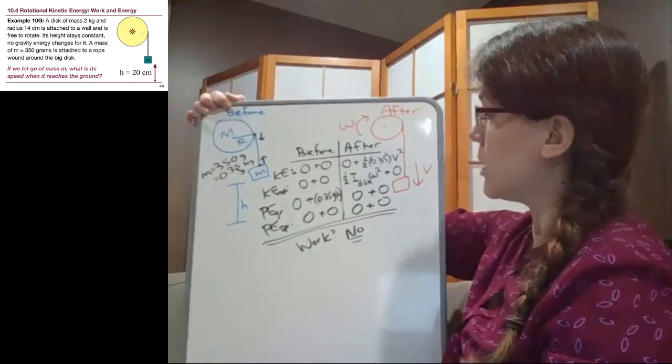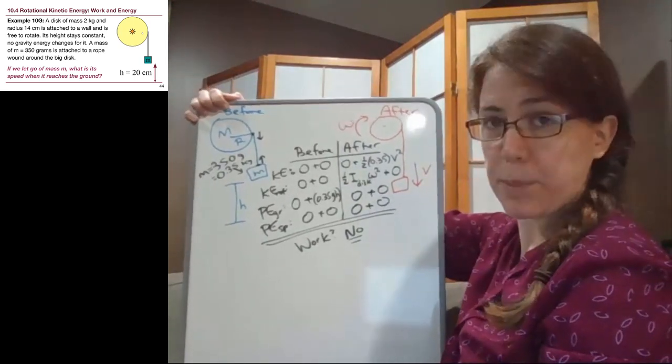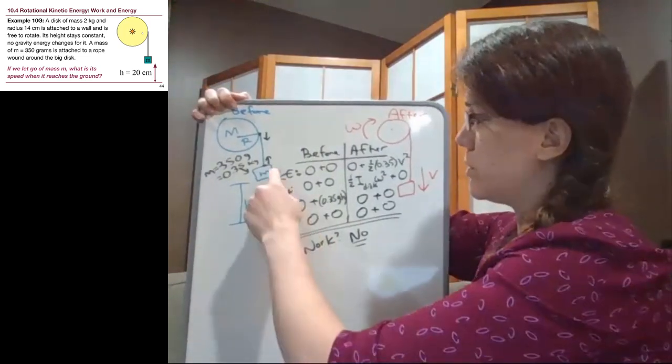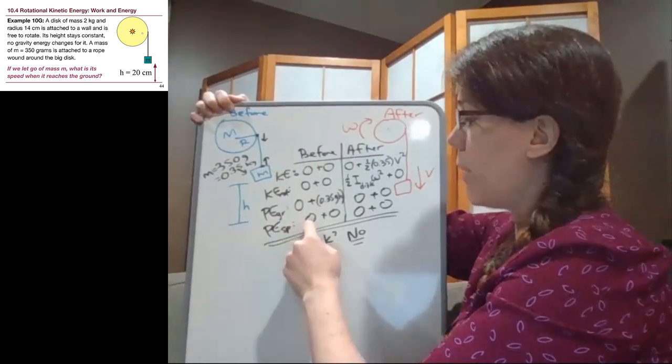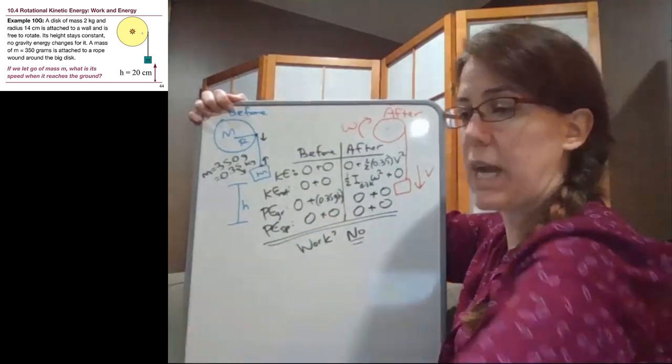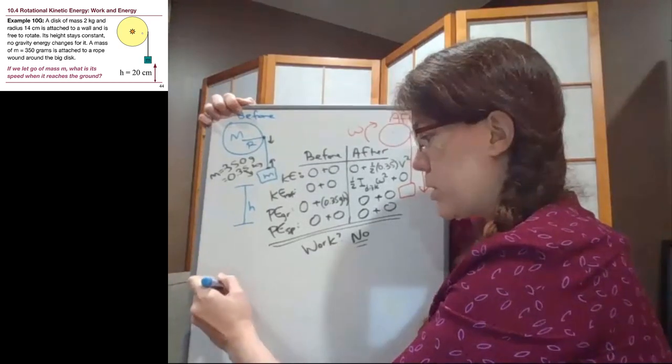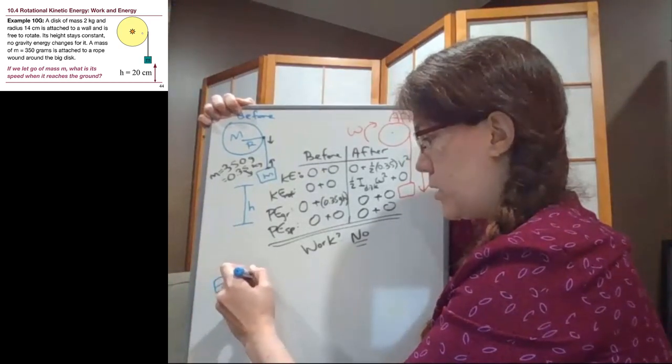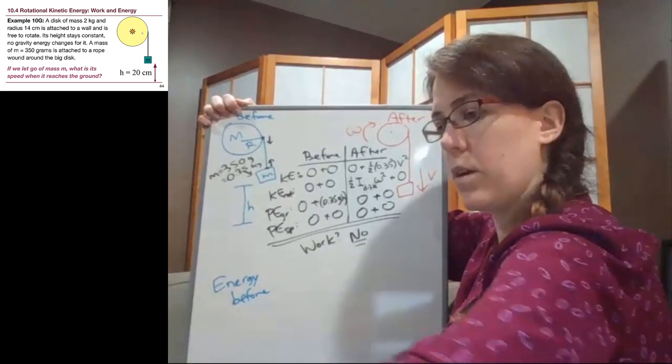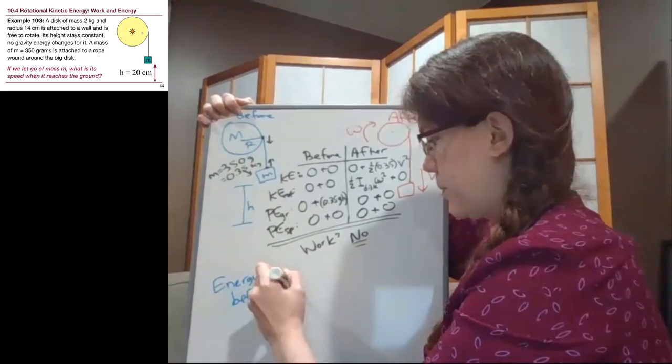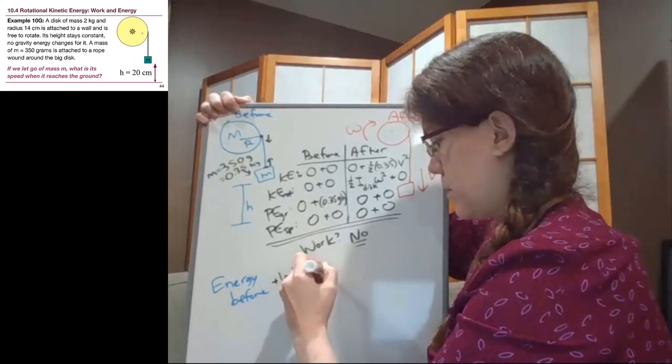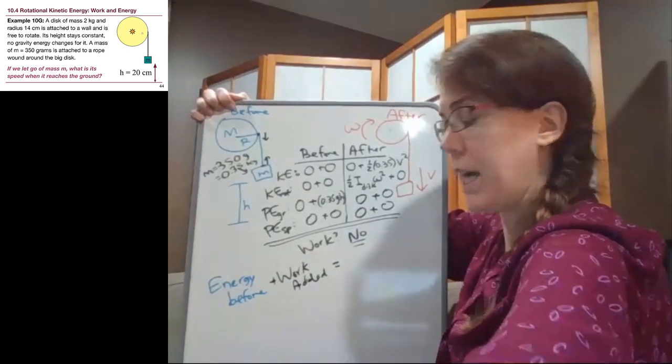Okay, so if we look, although this setup looks complicated, it's only because we were asking those questions - four questions - about each of those objects in the before and each of these objects in the after. But let's look at what actually happens here once we write down the equation. So energy before plus work added equals energy after.